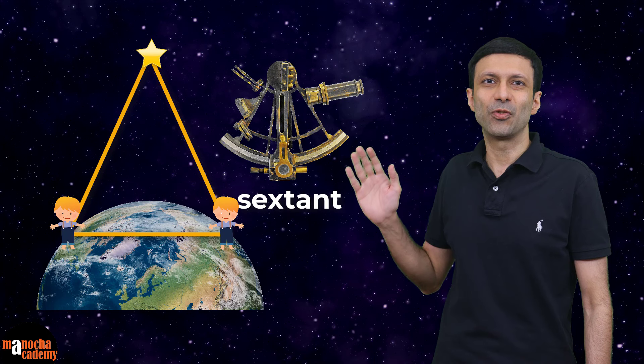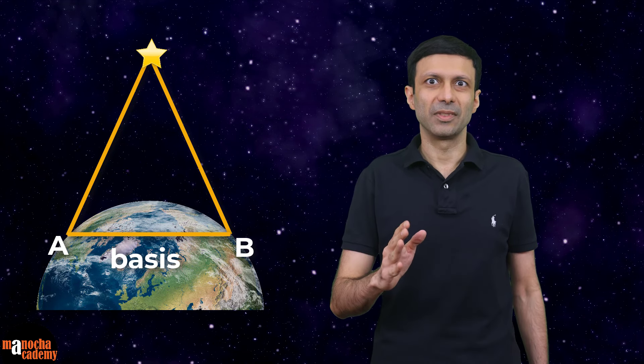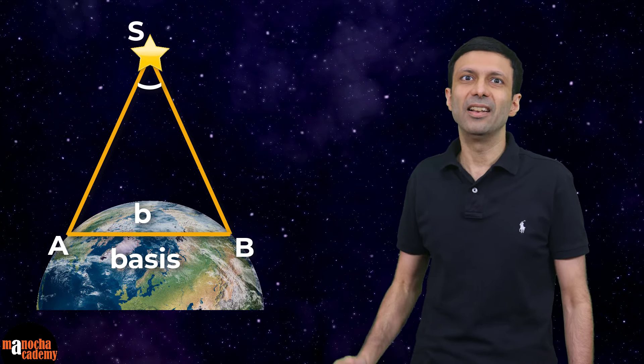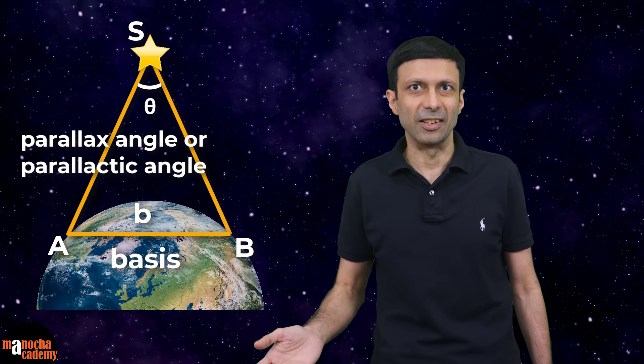The angles are measured using an instrument called a sextant. Once again, a triangle is formed like this. The distance between the two places on the earth, AB in the triangle, is called the basis. It's like the distance between our eyes and is denoted by the letter B. Now we can calculate the angle ASB at the vertex of the triangle here. This angle is denoted by theta and is called the parallax angle or the parallactic angle.